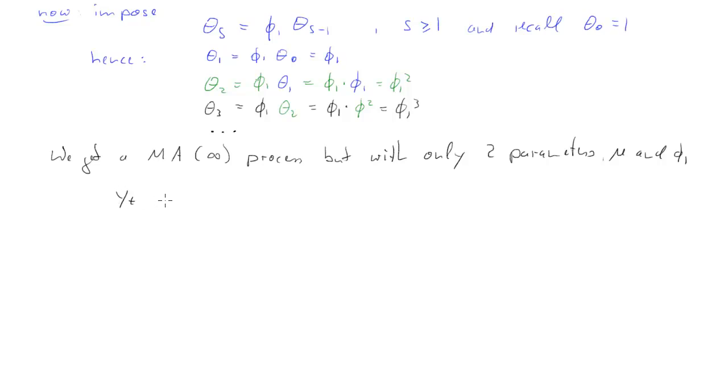Therefore, let us just restate that MA infinity process. This is the generic process, but now we replace for theta s our relation above. Theta s is phi 1 to the power of s times epsilon t minus s. Where do we have that from? Why is theta s equal to phi 1 to the power of s? This is if you just generalize these relationships which we've written down just here, you will realize that in general theta s is equal to phi 1 to the power of s. We have a modified MA infinity process. It's a specific MA infinity process.